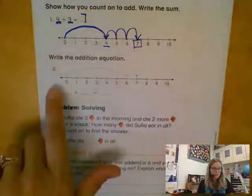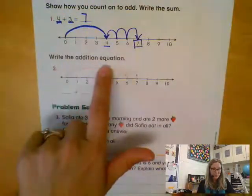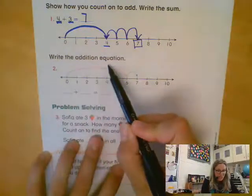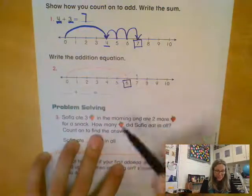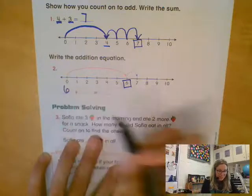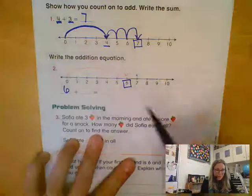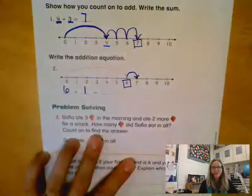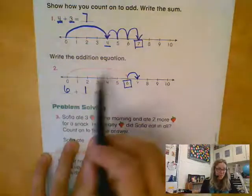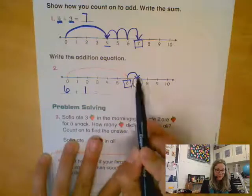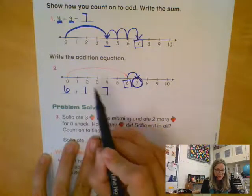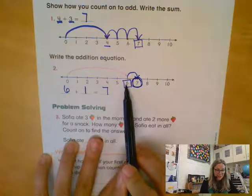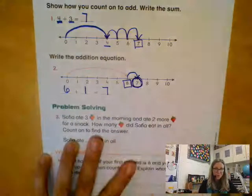Now they want us to come up with the equation. They have given us the jumps. So that first giant jump landed us on six. So our first number is six. Then we did ribbit one. So one ribbit hop, that's our second number. And when we did that ribbit hop, we landed on this number seven. So our addition equation for number two would be six plus one more equals seven.